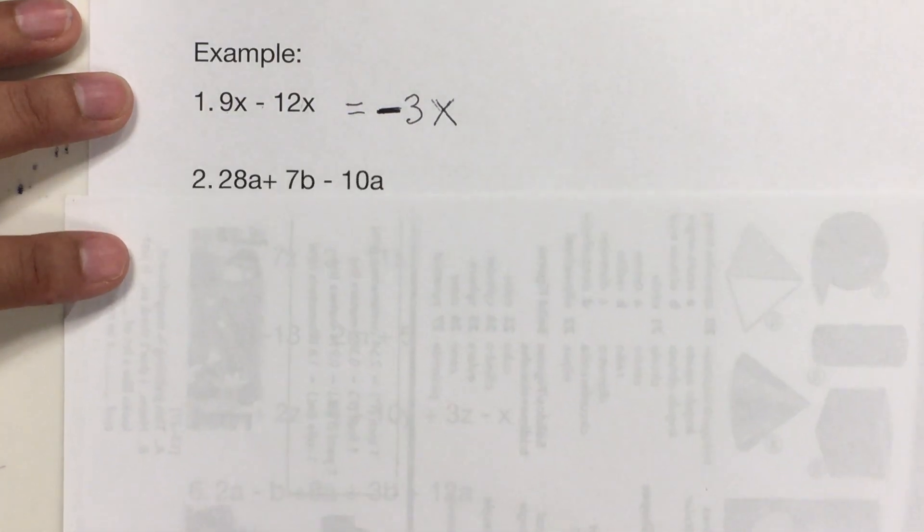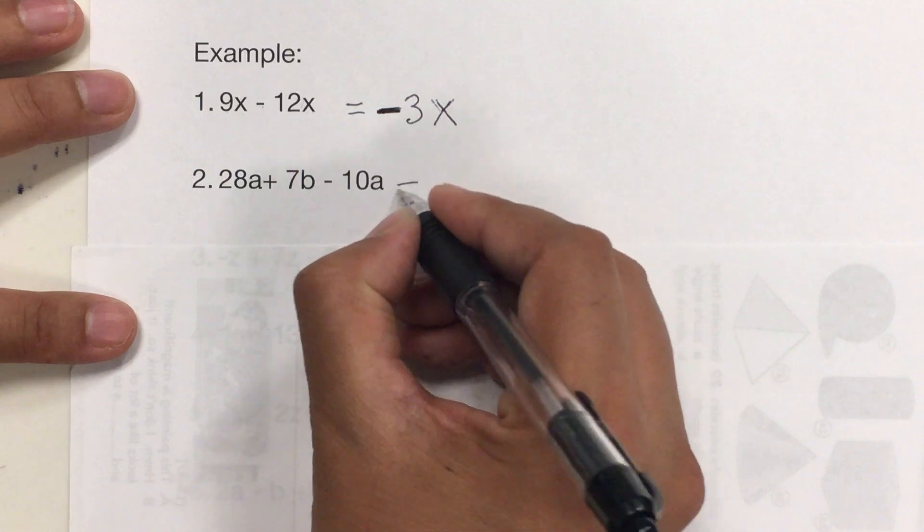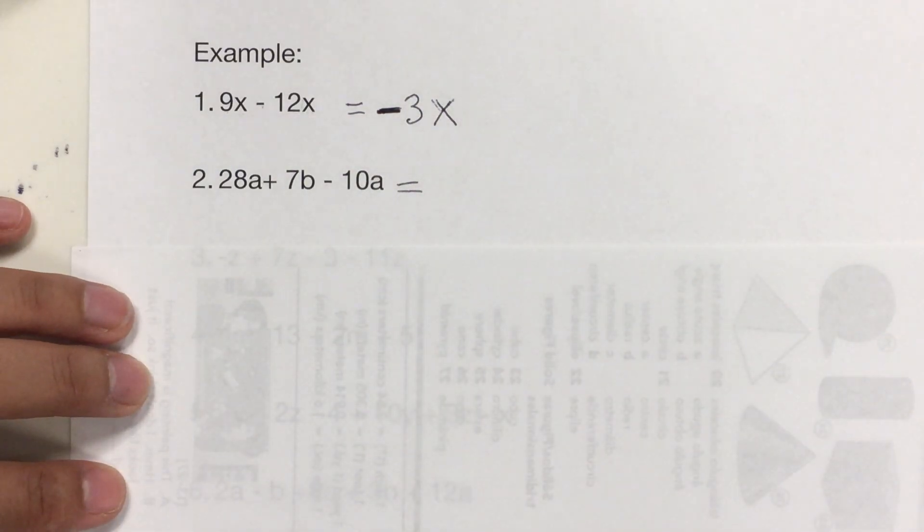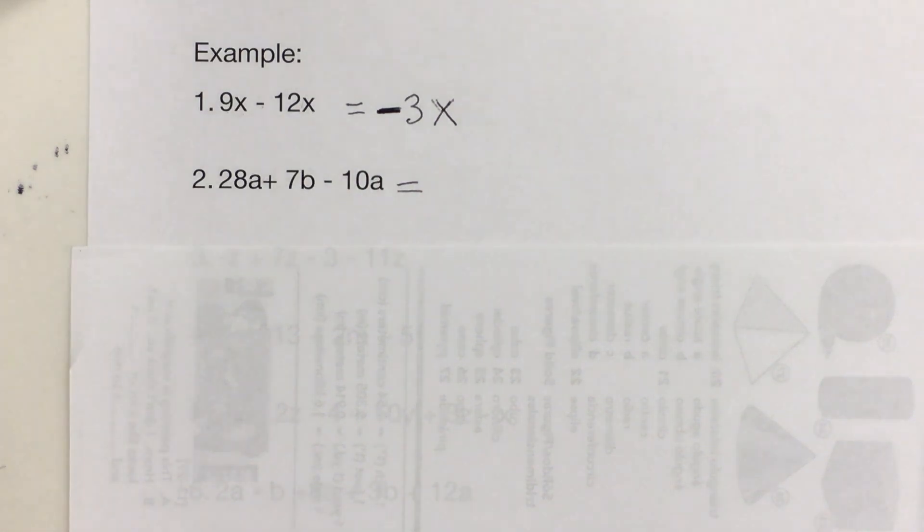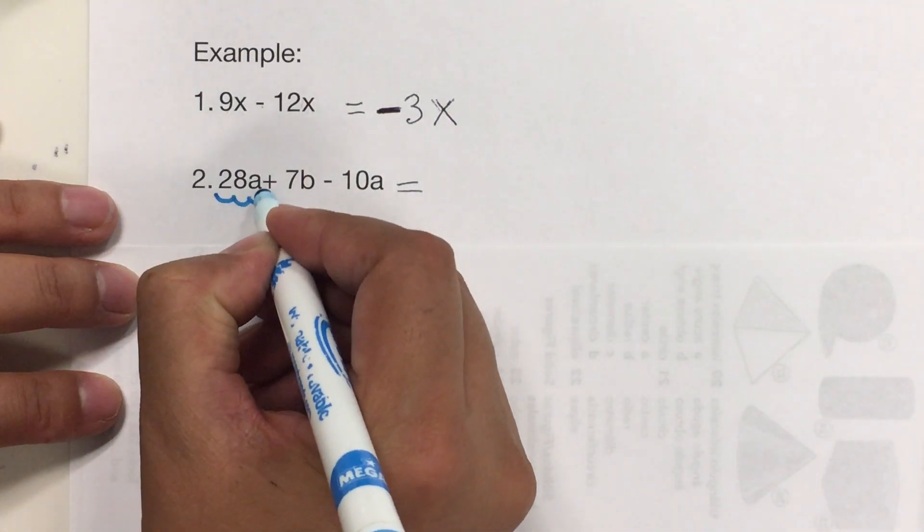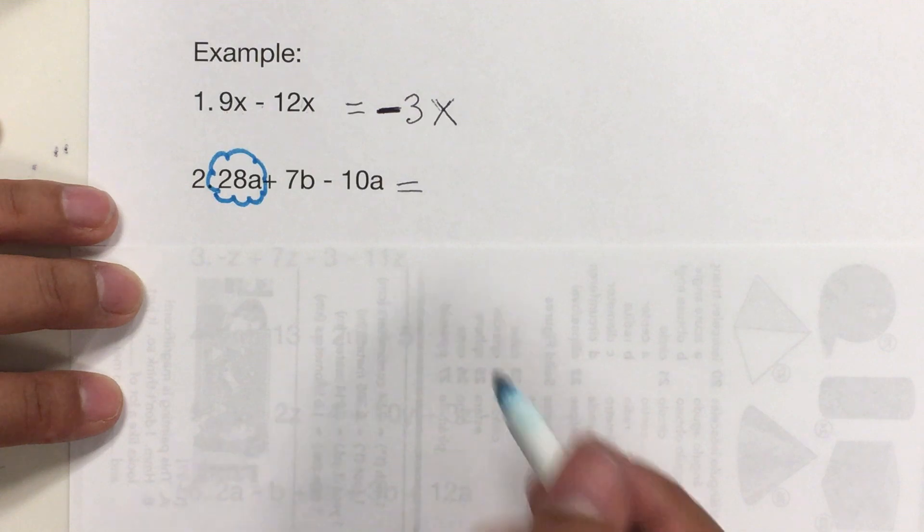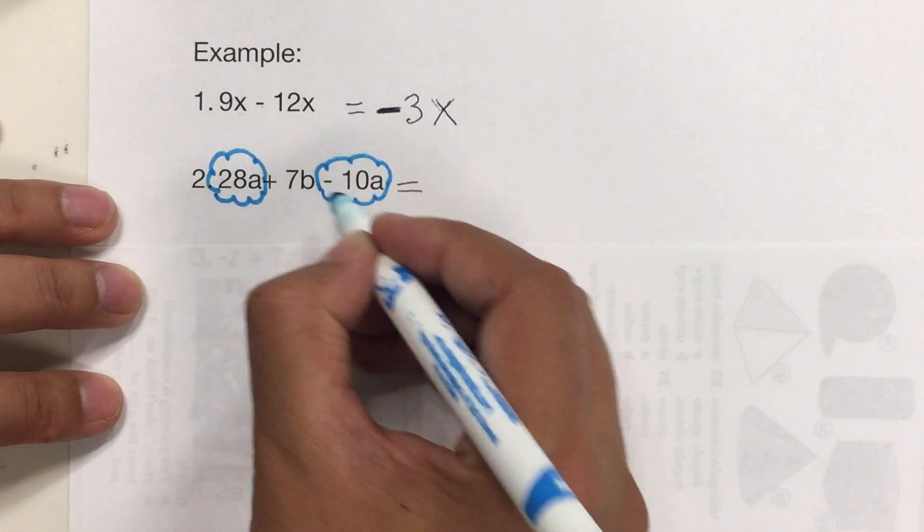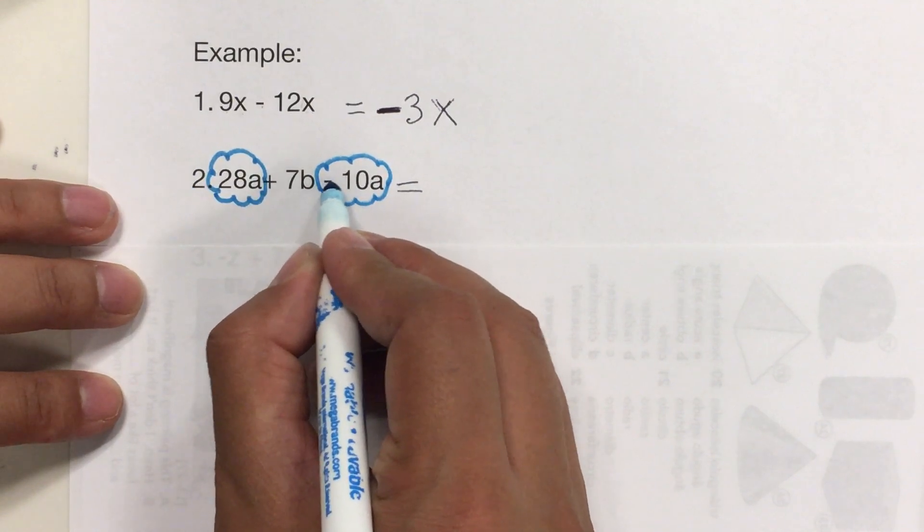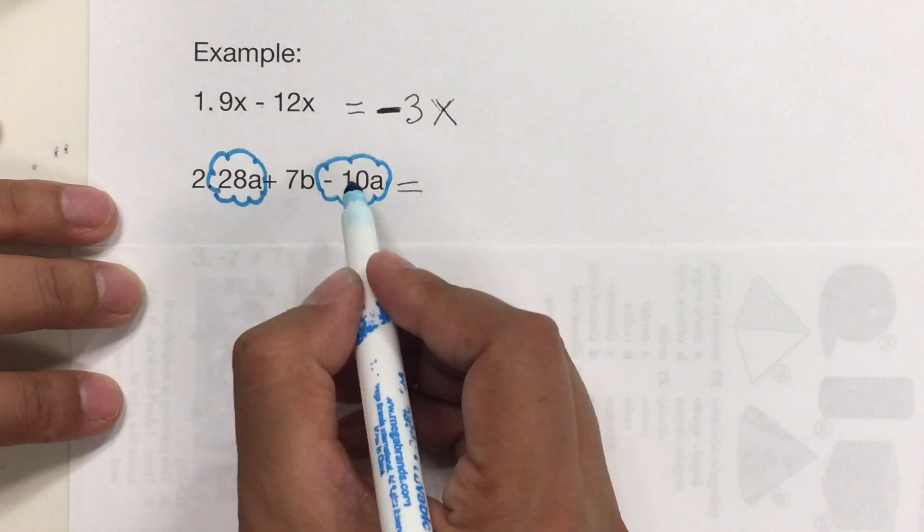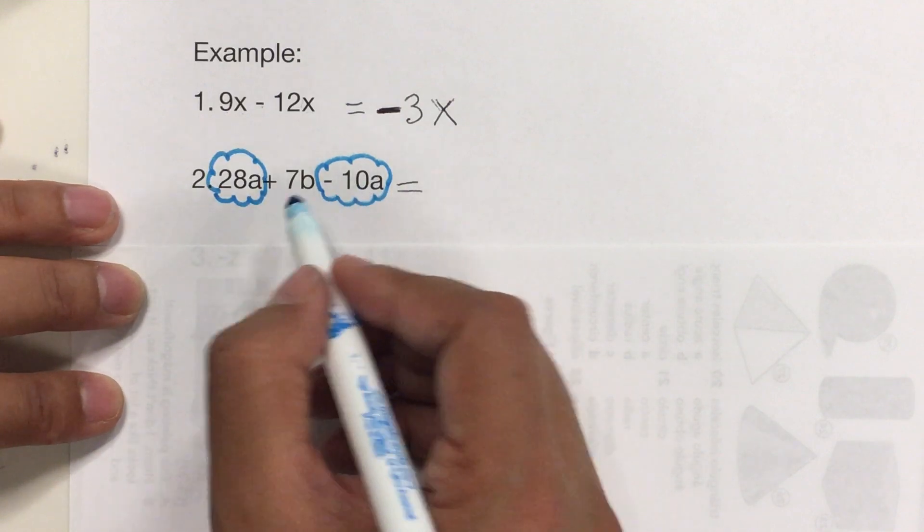So, I'm going to look for the ones that have the same variable, and usually what I do is to try either to use colors or shapes, or both. So, I notice that the 28a is like negative 10a. Notice how I enclose the sign to the left.